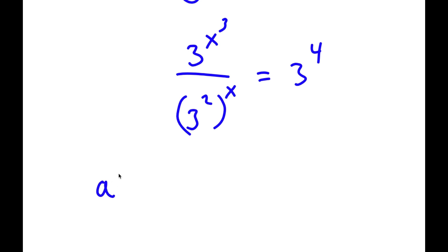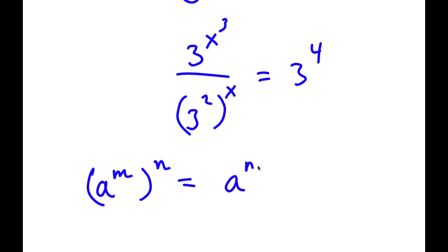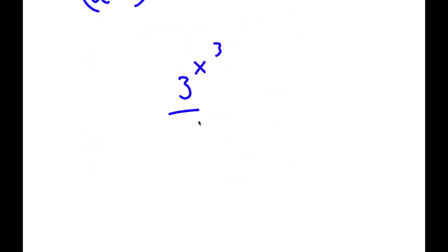Now if I have something in the form a to the power of m to the power of n, this is equal to a to the power of m times n. So 3 to the power of 2 to the power of x equals 3 to the power of 2 times x, which is 3 to the power of 2x. And this is equal to 3 to the power of 4.